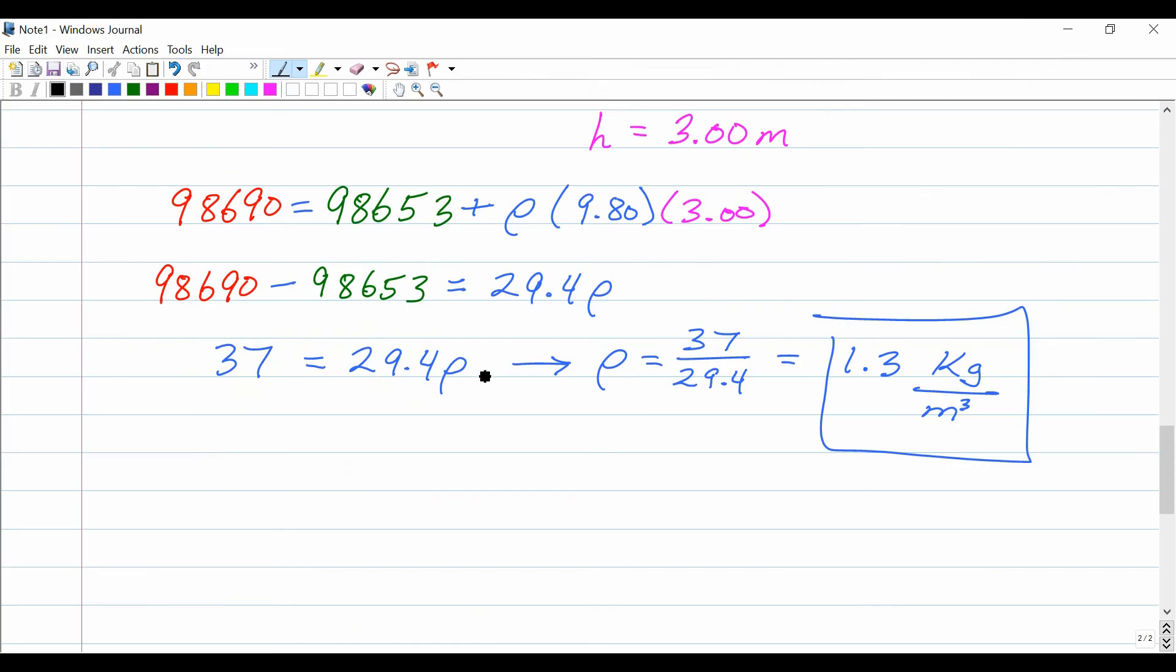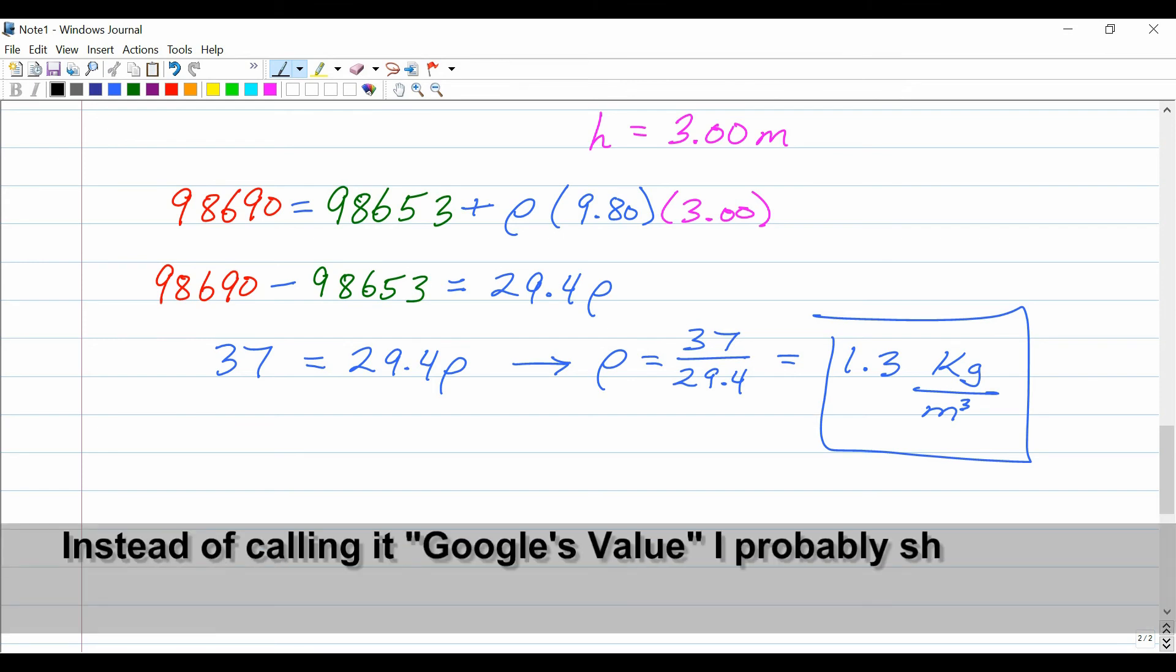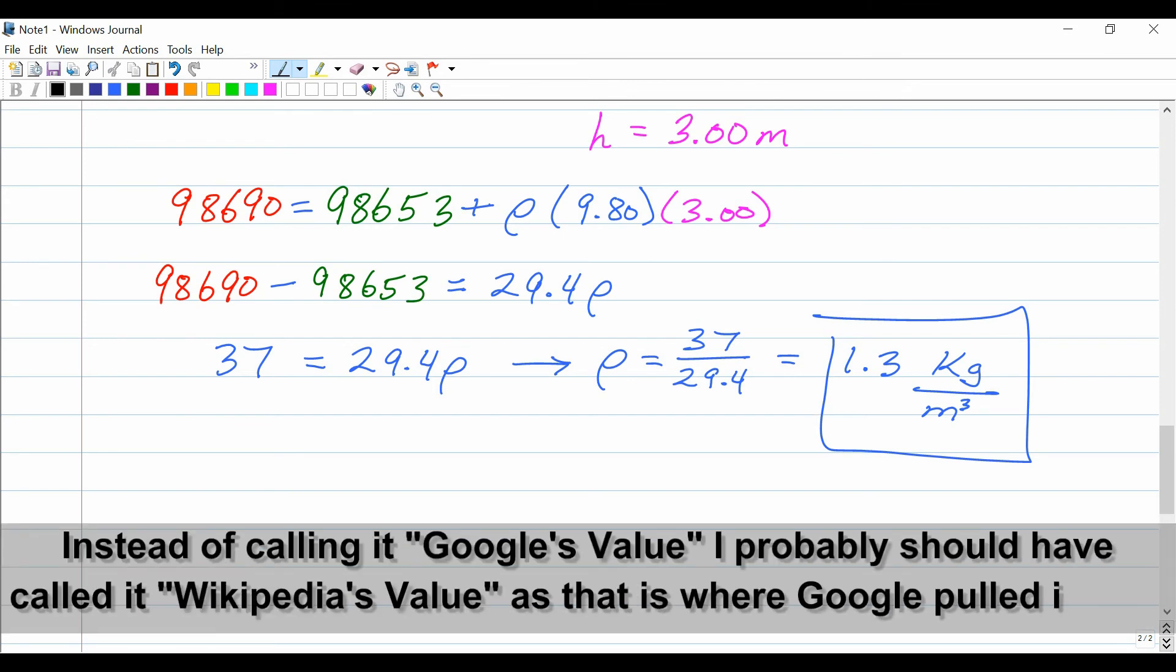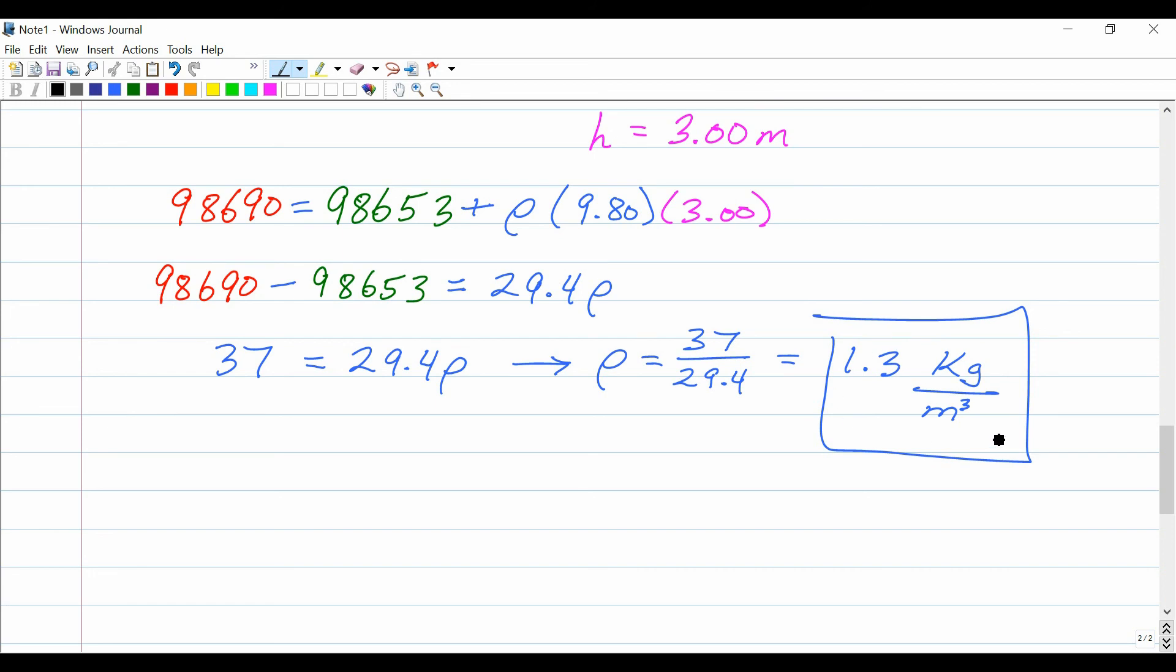So comparing that to my value of 1.3, you can see that we're really in the ballpark here. That's a very reasonable measure. Now, of course, there are variables I didn't factor in for comparing my value to Google's value in terms of the actual temperature here in this room, the actual humidity level, because that would also affect the density as compared to dry air. But I think you can see that we're actually doing pretty darn well. It actually works quite well.